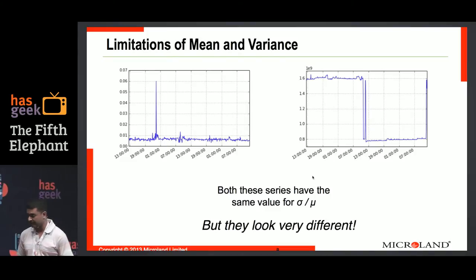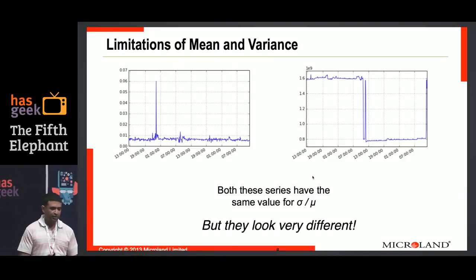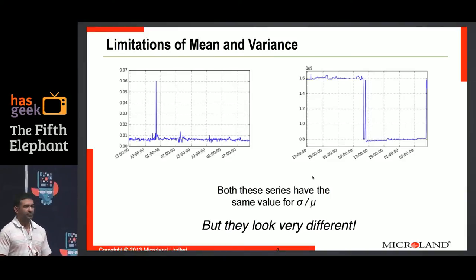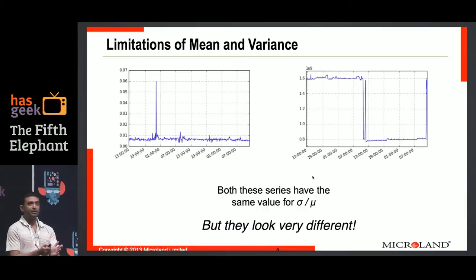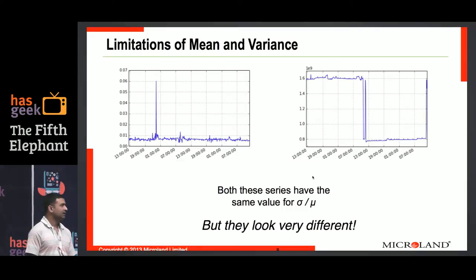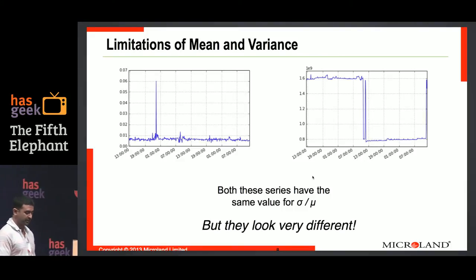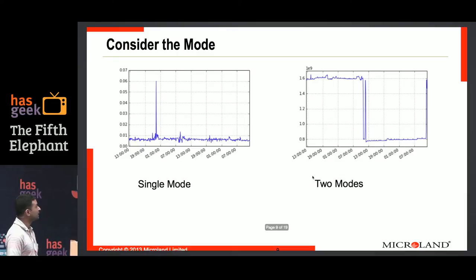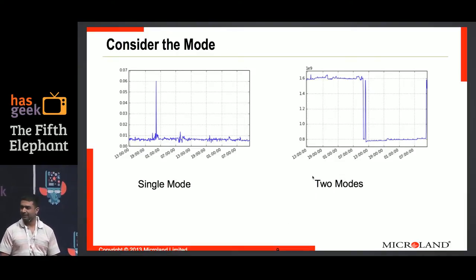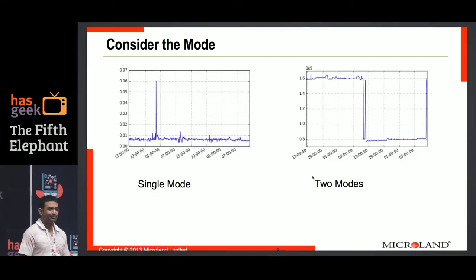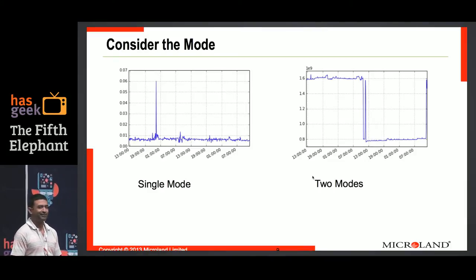If you want to approach this from the distributional point of view, you need to do something like: what is the value at time t conditioned on the last 10 observations you saw, and you build big conditional distributions. I didn't want to do that because it sounds complicated. So I looked at the mode. The mode is a very neglected statistic — it never comes up anywhere, probably because you can't pull it out of distributions easily.